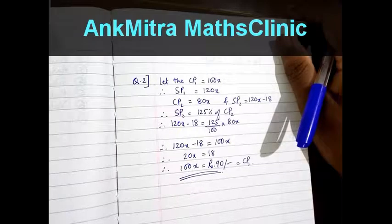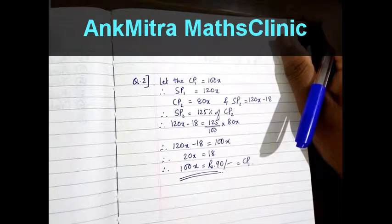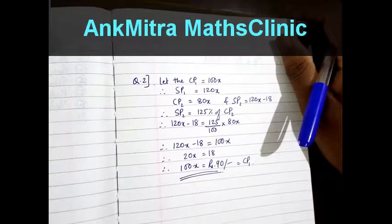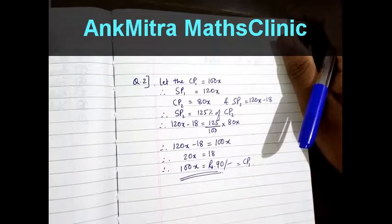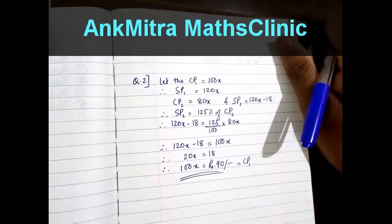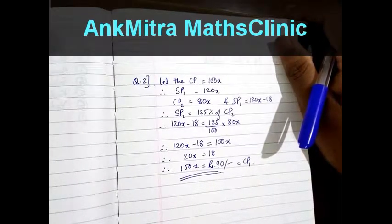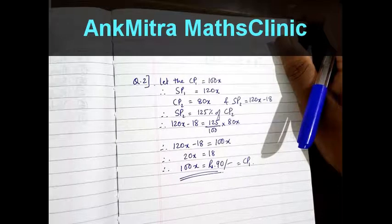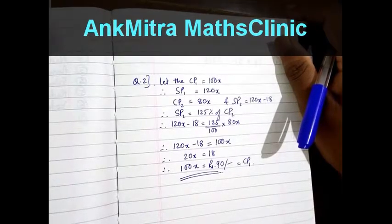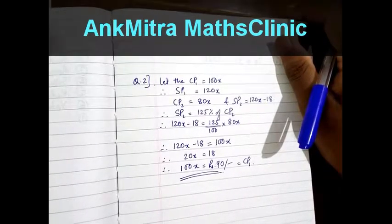A man initially sells a book at a profit of 20%. If he had bought it at 20% lower and sold it at Rs 18 less, he would have gained 25%. We are asked to find the original cost price of the book.